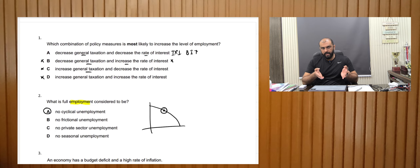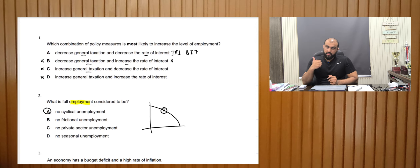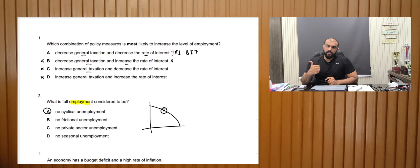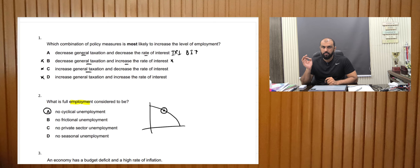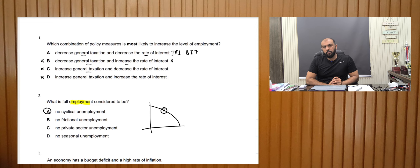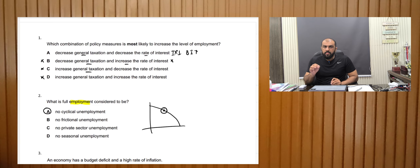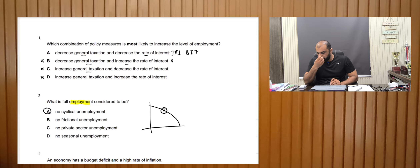Whenever full employment is being considered, this means there is frictional unemployment and seasonal unemployment, but there is zero percent cyclical unemployment. Whenever a country has zero percent cyclical unemployment, we say it has full employment, because at any time in any country there will be some people switching jobs and being temporarily unemployed — we don't consider that as unemployment.